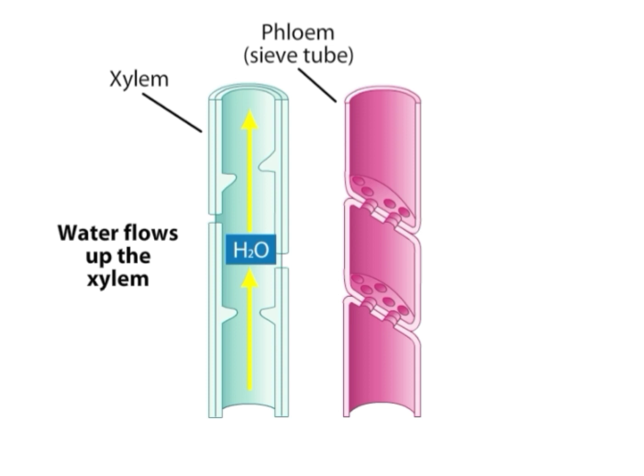Xylem vessels and xylem tracheids help transport water in the upward direction. Not only cohesive and adhesive forces, but also transpiration plays a role — leaves emit a lot of water molecules from the stomata, which helps water travel upward from root to the leaves.